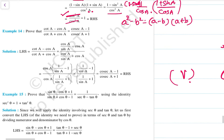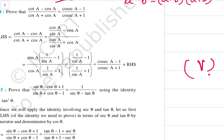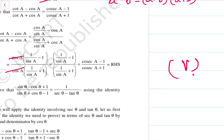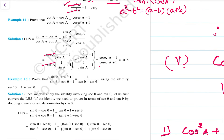Next example: Prove that (cot A − cos A) / (cot A + cos A) = (cosec A − 1) / (cosec A + 1). We represent cot A − cos A as (cos A/sin A) − cos A = cos A · (1/sin A − 1), and cot A + cos A = cos A · (1/sin A + 1). Taking cos A as common, it gets eliminated, and we get (1/sin A − 1) / (1/sin A + 1) = (cosec A − 1) / (cosec A + 1), which equals the RHS.